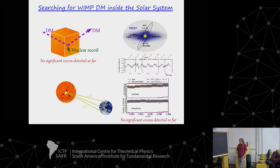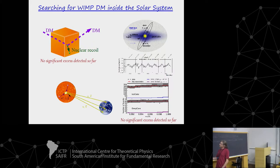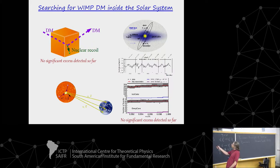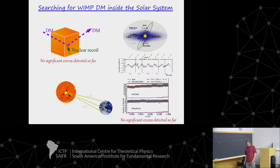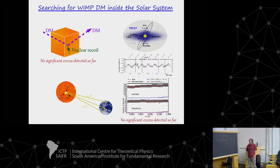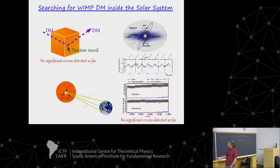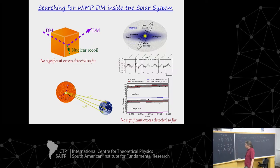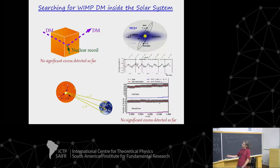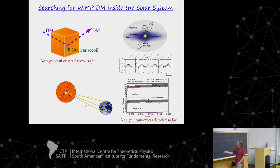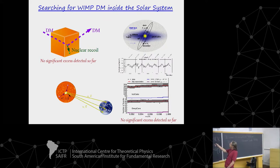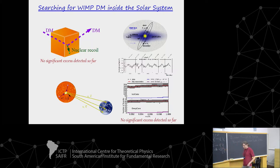Once dark matter particles accumulate in the solar center, you have a region where annihilations can be enhanced, and these annihilations can produce neutrinos that can be observed at the Earth. IceCube has detected neutrinos coming from the direction of the sun, but unfortunately all these neutrinos are compatible with having a terrestrial origin — most likely produced by collisions of highly energetic cosmic rays with Earth's atmosphere. The IceCube measurements are consistent with background expectations from atmospheric origin.